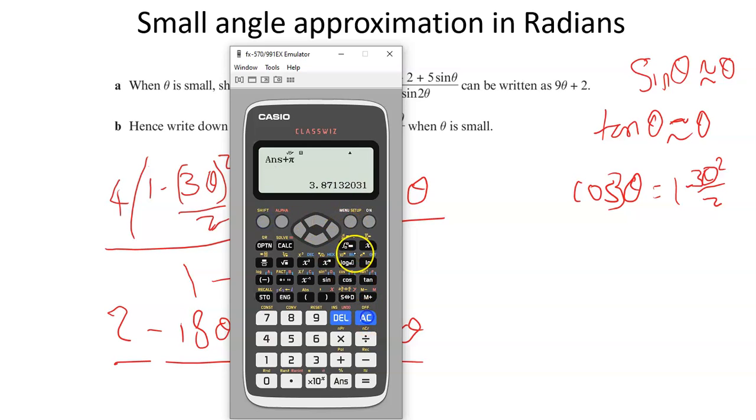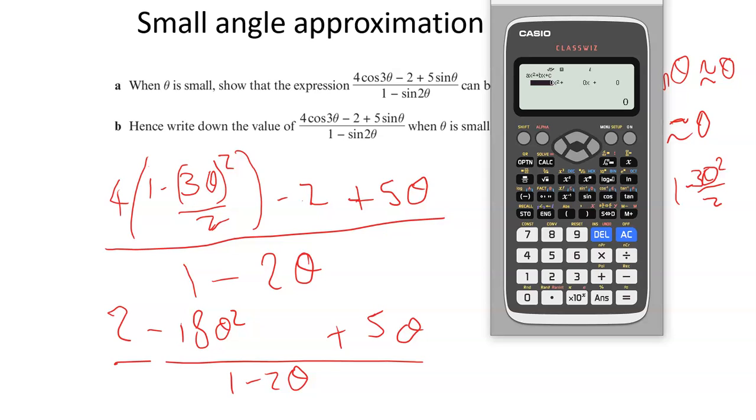Sorry, wrong button, menu A, polynomial, degree 2, and we've got, let's have a look. We've got minus 18 as the x squared, 5 and 2, and so we get an answer of a half and minus 2 over 9.